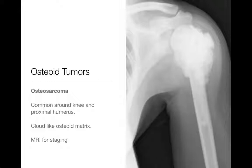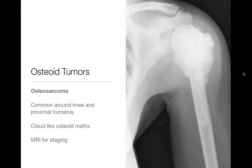Osteosarcomas are osteoid tumors, so they're going to have osteoid matrix. They're going to look aggressive and nasty like this one does in the proximal humerus. You can see that this is a geographic lesion but it has a wide zone of transition. It's sclerotic and has a very aggressive periosteal reaction associated with it. You see something like this in common locations such as the proximal humerus or about the knee — those are the favorite locations for osteosarcoma. Something that looks like this in a kid in those locations, you're going to think osteosarcoma. Could it be other things? Sure, it's possible, but osteosarcoma is going to be far more likely.